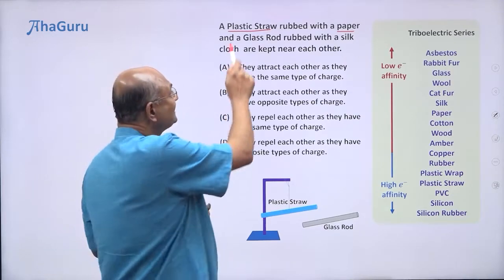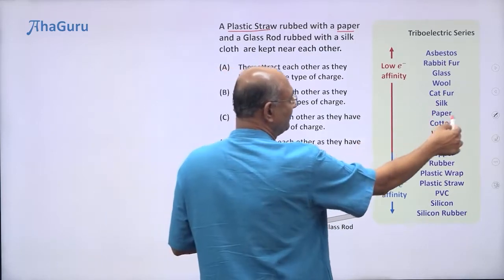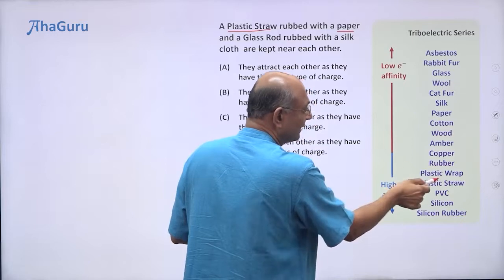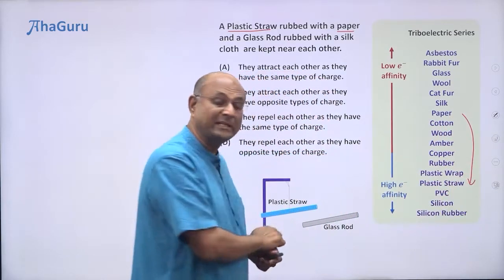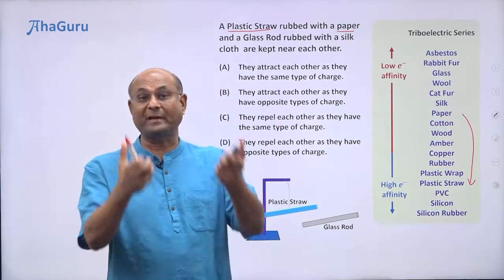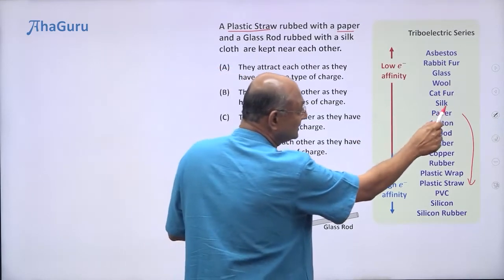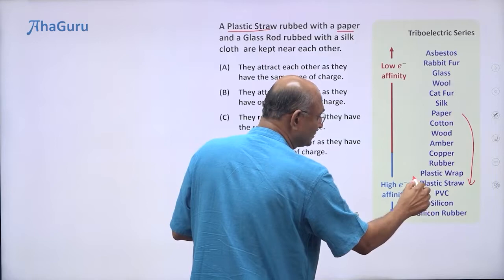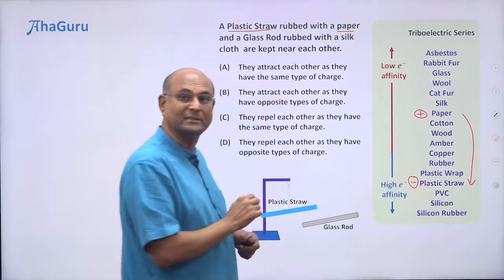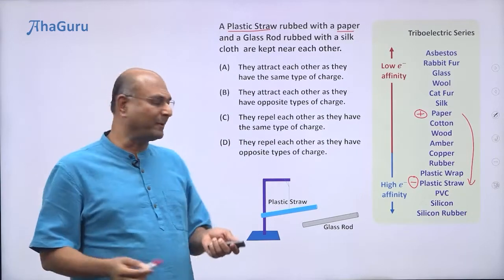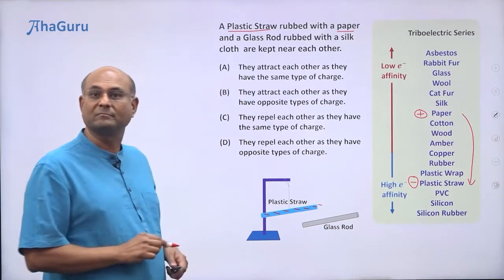Let's look at what happens with the plastic straw rubbed with paper using the triboelectric series. Paper is high up on the series and plastic straw is way below it. The plastic straw has high electron affinity and wants electrons, while paper is ready to give them. So electrons jump from paper to plastic straw — the plastic straw becomes negatively charged, and we are only interested in the plastic straw, which is negatively charged.